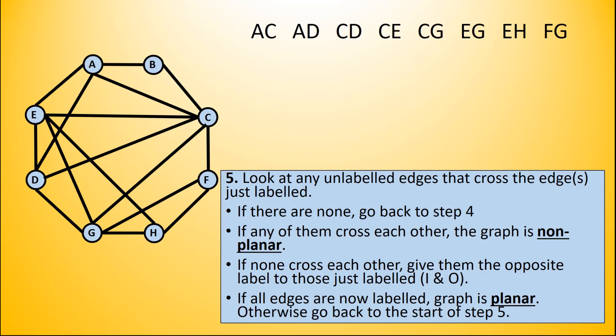So we take our modified graph and work with that. First of all, we're identifying all of the edges that are inside - there are eight in this case, a little bit more work to do than in the previous example. Then we choose one to label. If I choose AC, I label it with an I, but we notice actually that there are no edges crossing it, so we don't need to do any more with that one.